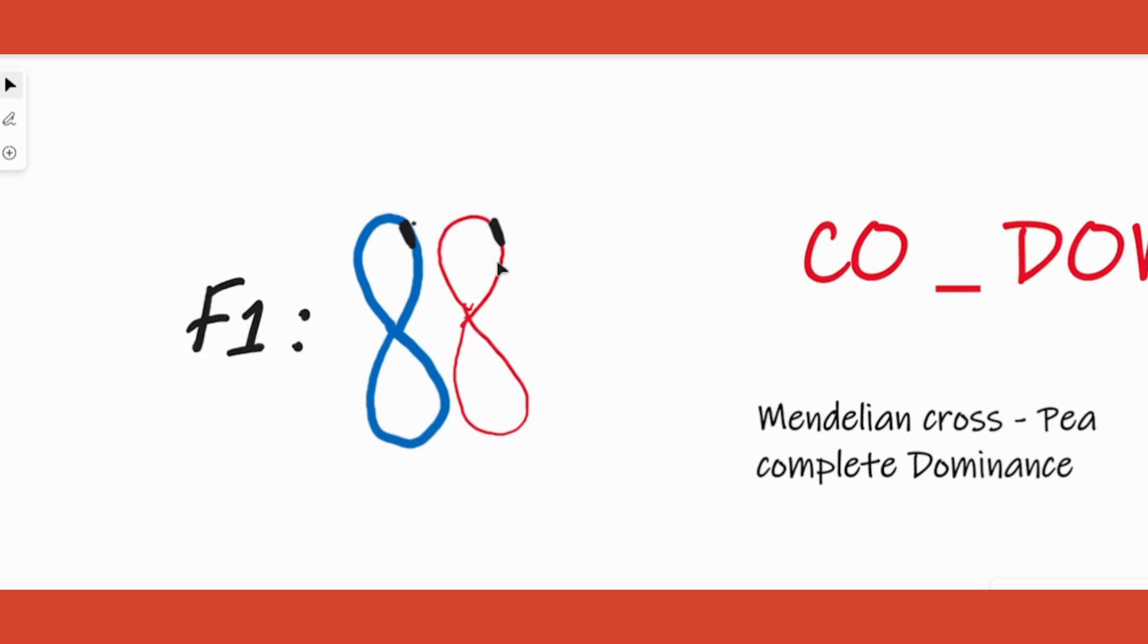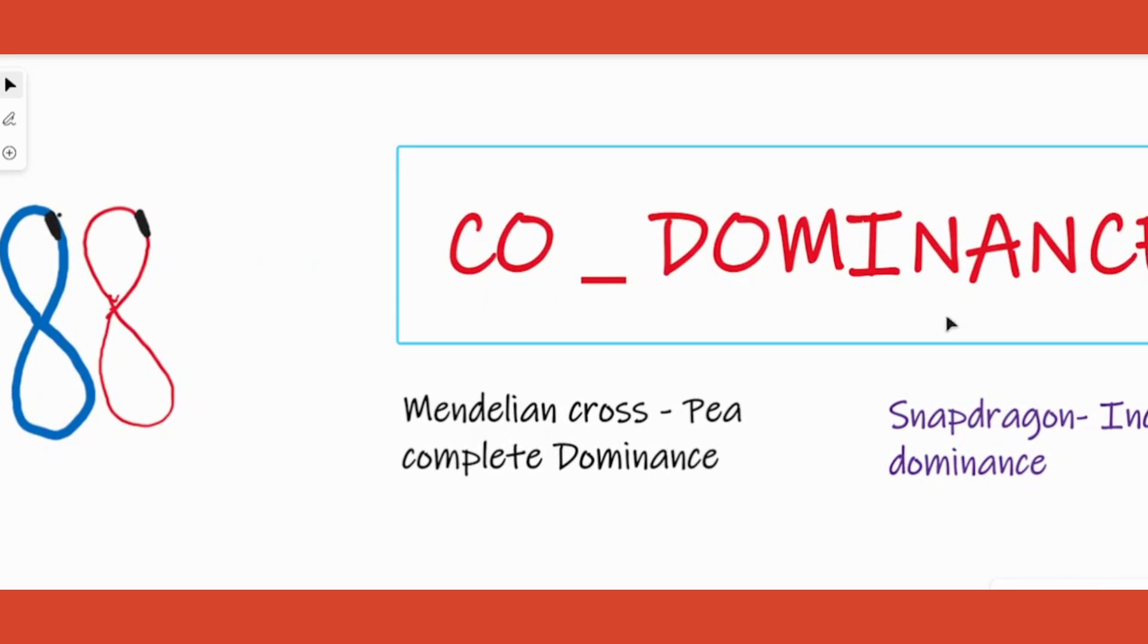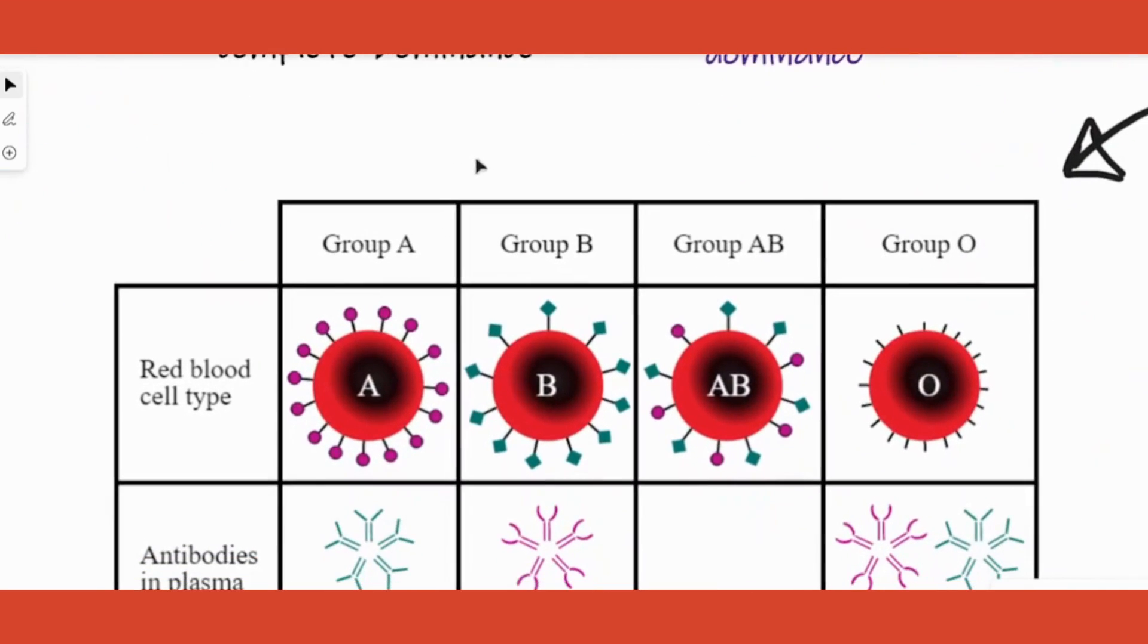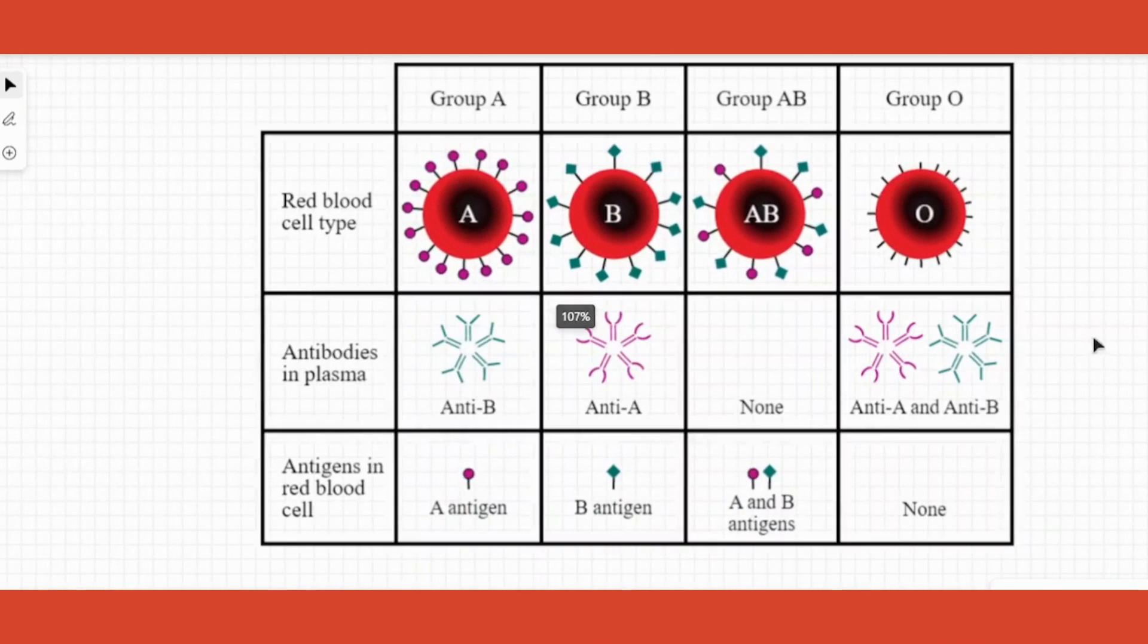Now today, the topic we are going to deal with is co-dominance. You will find that both alleles are dominant. So how is this possible and what is the example for this? The example is human blood grouping. In case of human blood grouping, you should understand how we give names to particular blood groups.